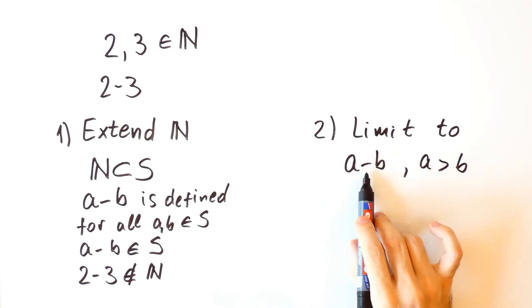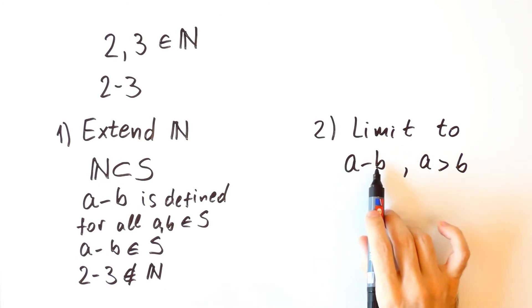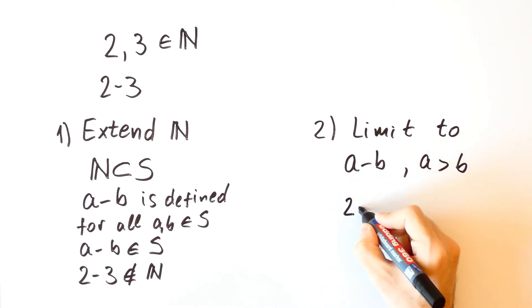But in this case, subtraction isn't an operation because not all combinations of a and b are allowed. For instance, when a is equal to 2 and b is equal to 3, which means that the difference 2 minus 3 isn't defined.